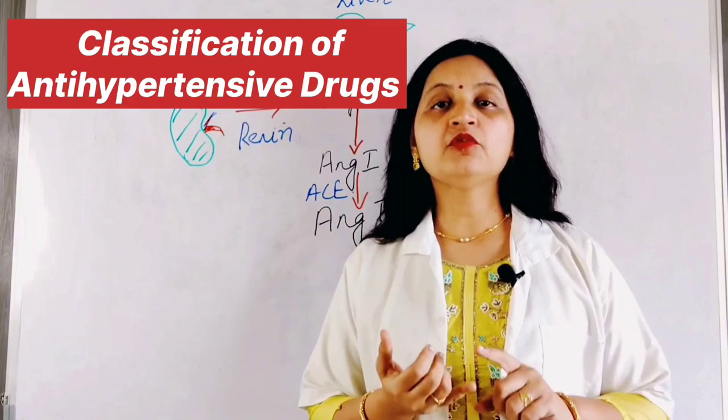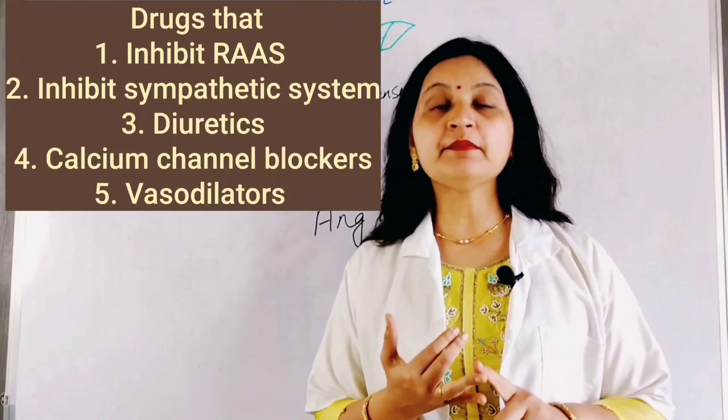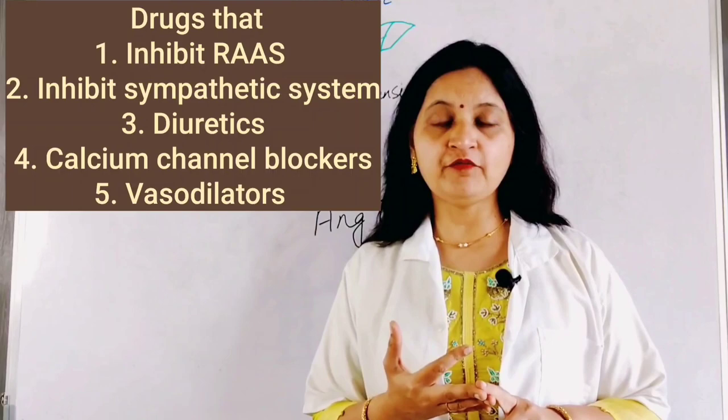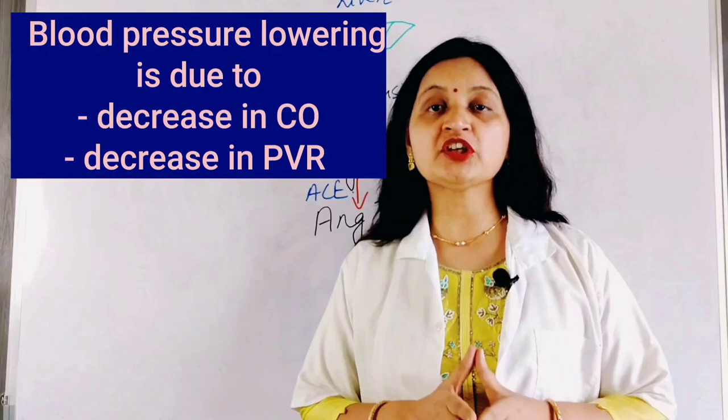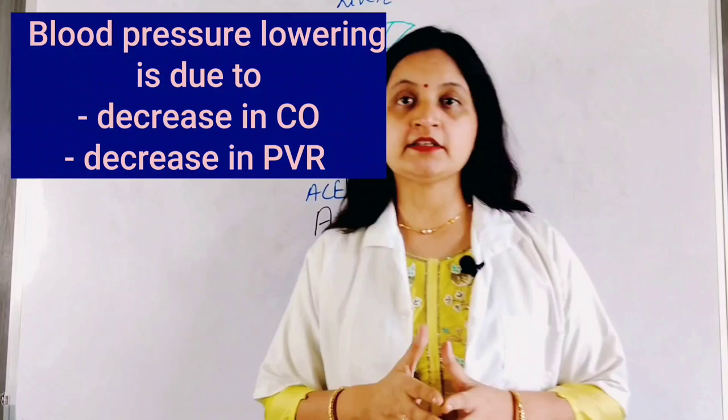The five groups are: drugs that inhibit the renin-angiotensin-aldosterone system, drugs that inhibit the sympathetic system, diuretics that decrease the extracellular fluid volume, calcium channel blockers, and vasodilators. These 5 major drug groups help in reducing blood pressure by decreasing the cardiac output and decreasing the peripheral vascular resistance.